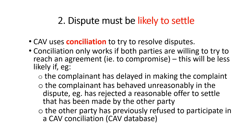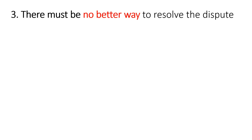The third and final factor is whether there is a better way to resolve the dispute than using Consumer Affairs Victoria. If there is no better way, then it will be appropriate for Consumer Affairs Victoria to assist. This leads to the first golden rule: providing the dispute is within its jurisdiction, Consumer Affairs Victoria will be the most appropriate dispute resolution body where the parties are willing to compromise and the dispute is small and simple.